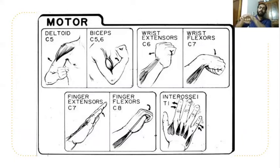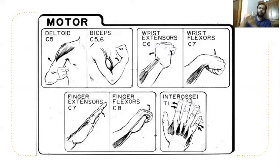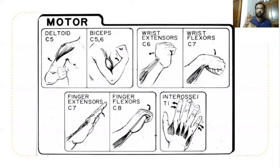For C7, ask the patient to flex the wrist against resistance. Also for C7, ask the patient to extend the elbow against resistance for checking the power of triceps. Along with that, long finger extensors are also checked. So for C7, three muscles are tested: wrist flexors, elbow extensors (triceps), and long finger extensors.